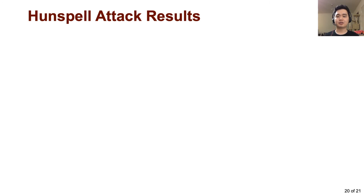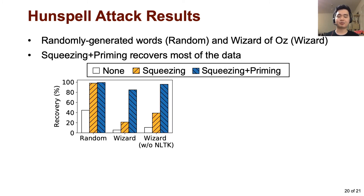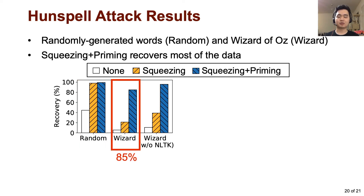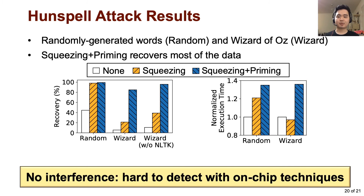I'll show the result on Hunspell. We ran spell checking on two different documents: randomly generated words, and a natural language document — Wizard of Oz. Wizard of Oz was much harder to attack since it contains many repetitive common words, incurring fewer cache misses. The results show that the combination of cache squeezing and priming can recover most of the victim's data — up to 99% of the random document and 85% of the natural language document. Moreover, squeezing plus priming slows down the application only up to 36%, which is difficult to distinguish from benign slowdown. Since both techniques do not incur any interrupts or page faults, it is very difficult to detect the attack with existing hardware or software.